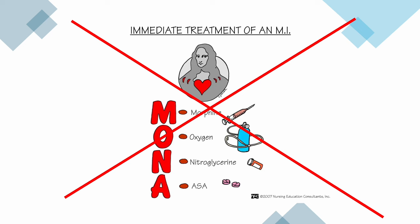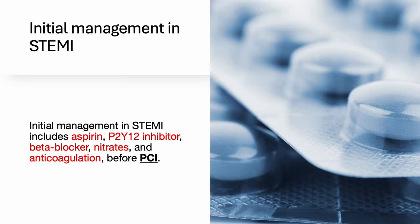Oxygen is not routinely administered if a patient's oxygen saturation exceeds 94% and they exhibit no signs of respiratory distress. Similarly, morphine is not routinely given, particularly in patients who present with low blood pressure. The medications to consider as initial management in ST elevation MI include aspirin, P2Y12 inhibitor, beta blocker, nitrates, and anticoagulation before a PCI.